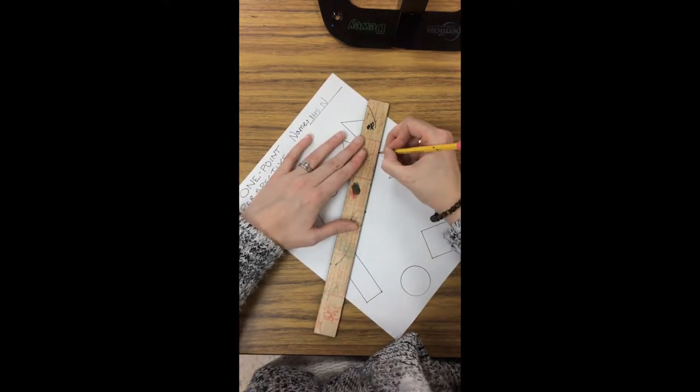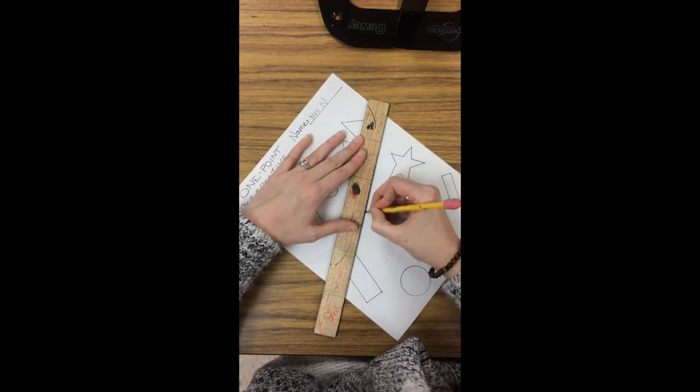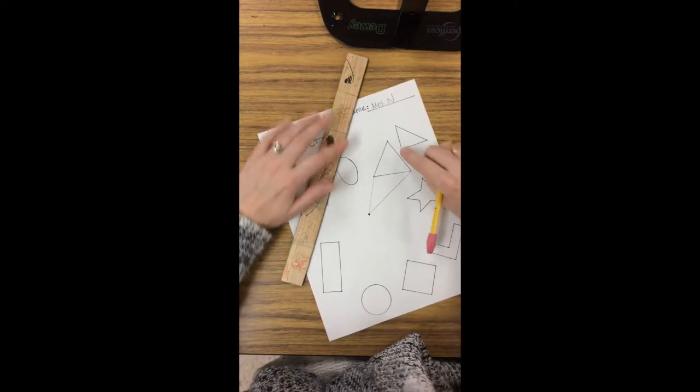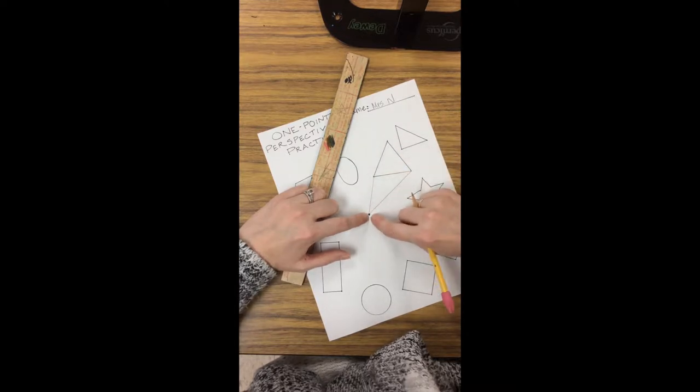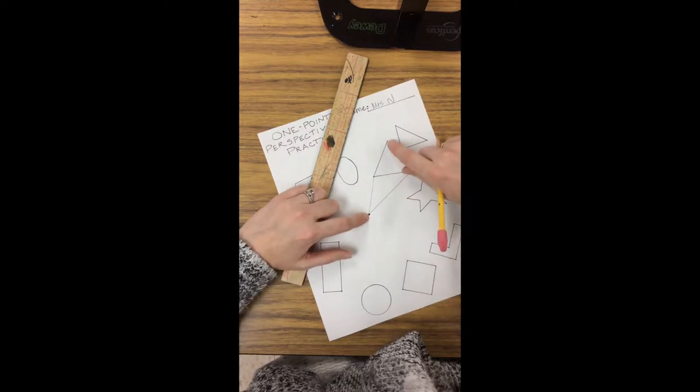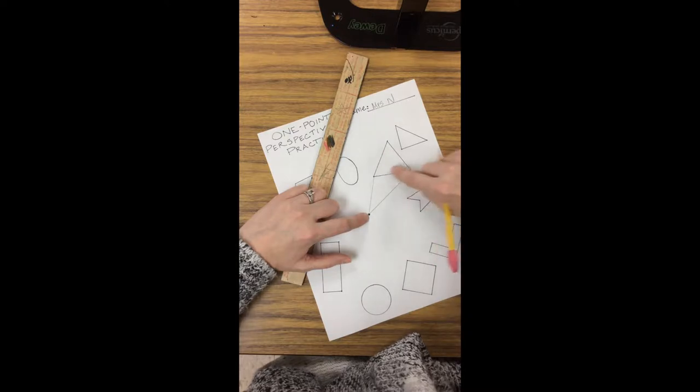I'm going to do that from this corner. And for the purposes of our project, we're not going to go from any corners that you have to go through the shape to get to the vanishing point. So for this triangle, I would only do these two corners.